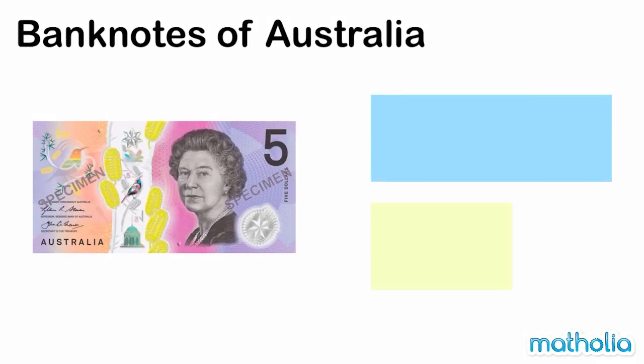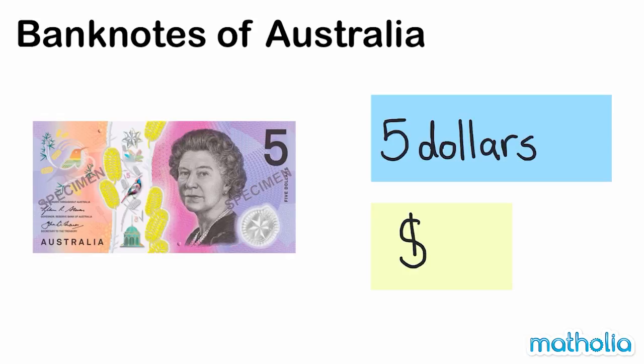Banknotes of Australia. Have you seen this banknote before? This is a five dollar note. Five dollars. We write five dollars like this — a big S with a line down the middle and a number five.